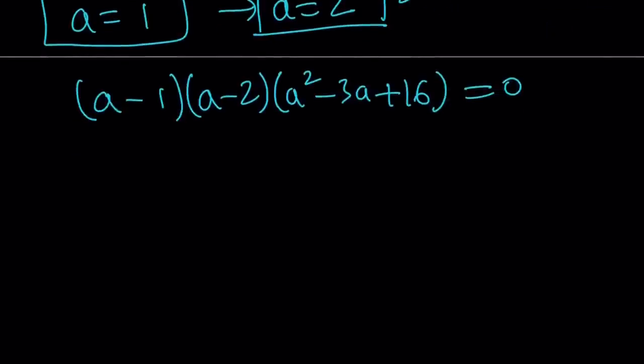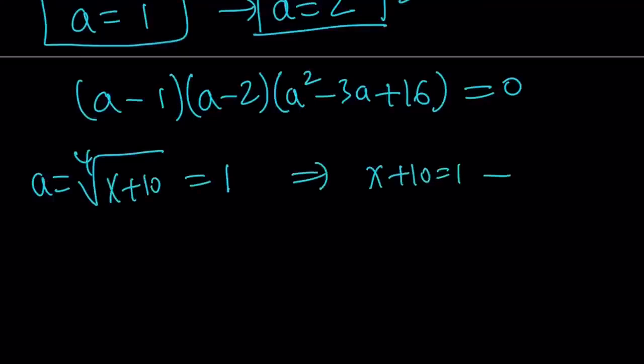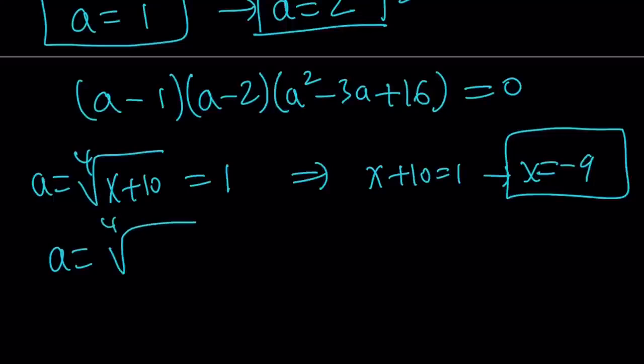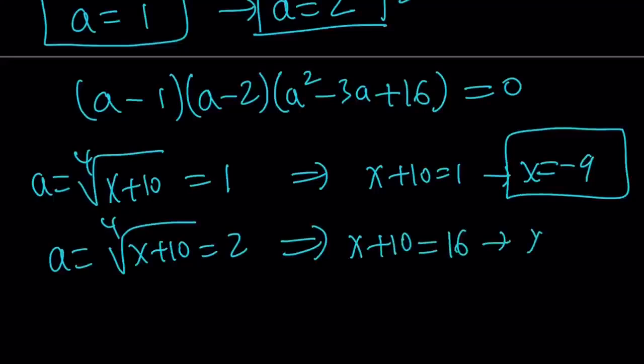Obviously, from here, we know a equals 1. But, a is 4th root of x plus 10, and that should equal 1. From here, we get x plus 10 is equal to 1. And, x equals negative 9. Great. So, that's one of the solutions. I don't know if you guessed that one. But, a equals 2 is going to give us another solution. Set it equal to 2. Raise both sides to the 4th power. You get x plus 10 is equal to 16. And, x equals 6.